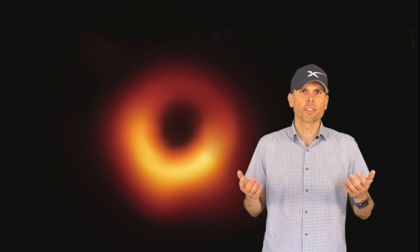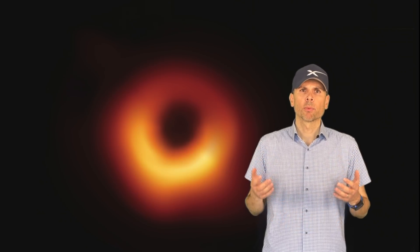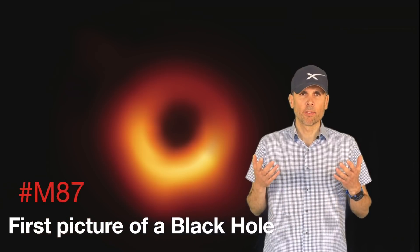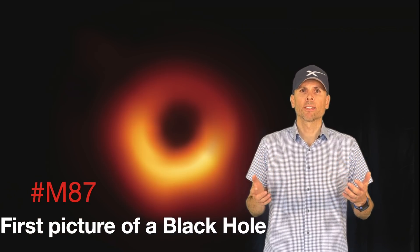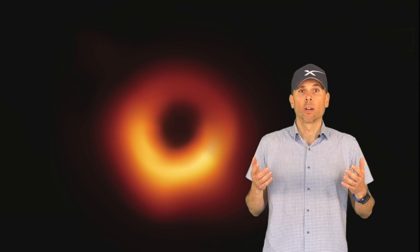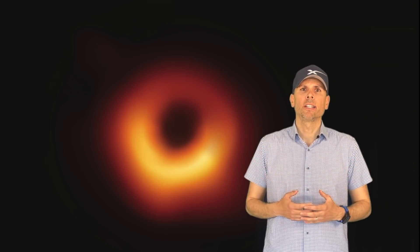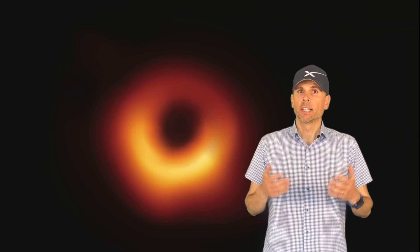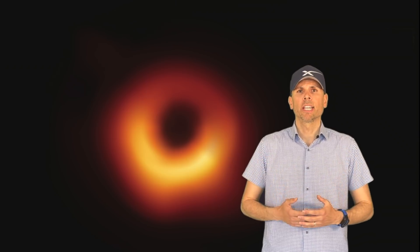When a team of scientists held a press conference almost three years ago, people were stunned to see the first ever picture of a black hole unveiled. The image reveals the central black hole of Messier 87, a massive galaxy in the Virgo cluster which is 50 million light years away from Earth.